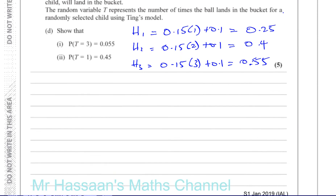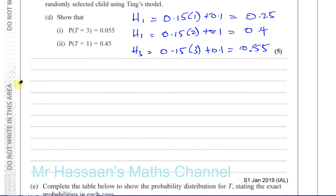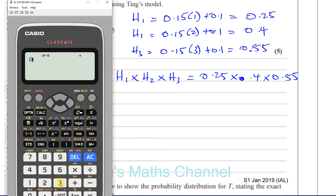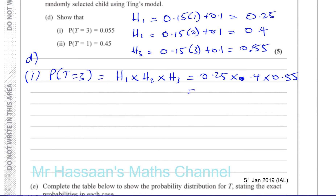Now for part d part one, we find the probability that T equals three — hitting all three balls in the bucket. That's simply the product of all three probabilities: 0.25 × 0.4 × 0.55. Be careful not to press the wrong button on the calculator. This gives 11/200, which is 0.055, confirming we're on the right track.